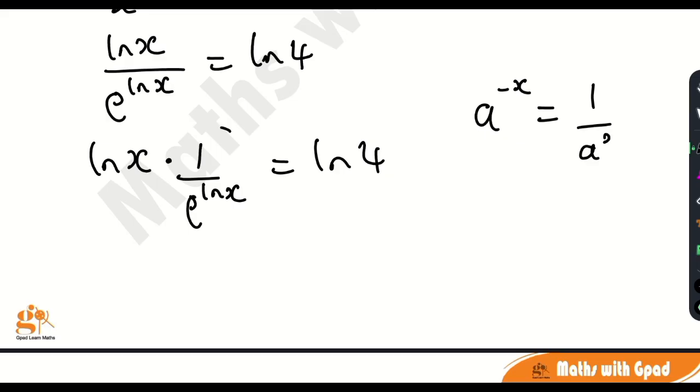So if I want to clear this fraction, I would have to rewrite this as ln x times e minus ln x. Notice, if you apply the log indices here, it will give you back 1 over e ln x. So this is equal to ln 4.